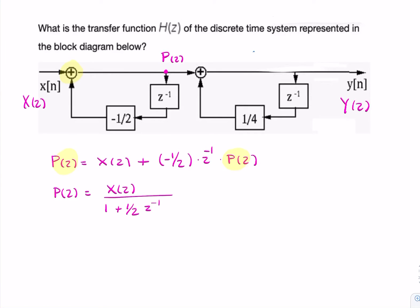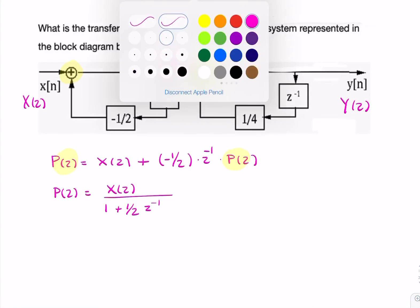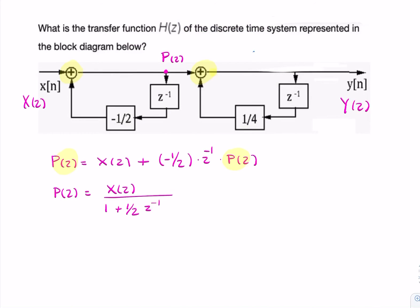Now I can do something similar here to find y(z). So y(z) appears to be the sum of P(z) and a scaled and delayed version of y(z).